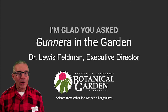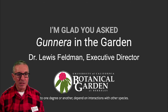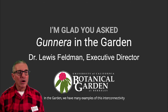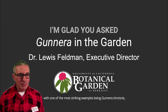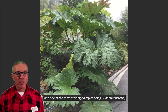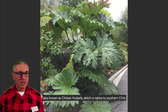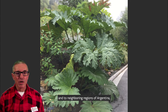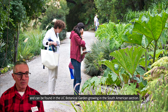Rather, all organisms, to one degree or another, depend on interactions with other species. In the garden, we have many examples of this interconnectivity, with one of the most striking examples being Gunnera tinctoria, also known as Chilean rhubarb, which is native to southern Chile and to neighboring regions of Argentina, and which can be found in the UC Botanical Garden growing in the South American section.